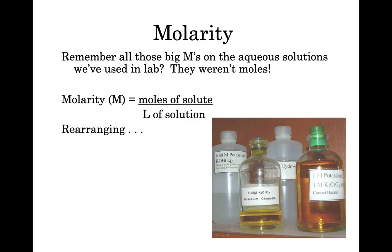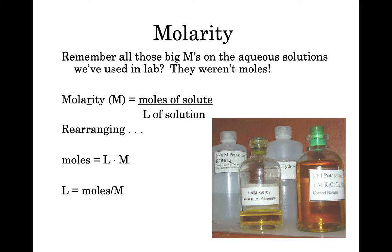If we do a little rearranging, we find that we can solve for moles by multiplying liters times molarity. So if I have a certain number of liters of solution and I multiply those liters by the molarity, I will get how many moles of solute I have. If I want to know how many liters to use, I divide the moles I want by the molarity of the solution. Remember, liters are a thousand milliliters, and since most of our volume measuring instruments like graduated cylinders use milliliters, that's an important conversion to know.